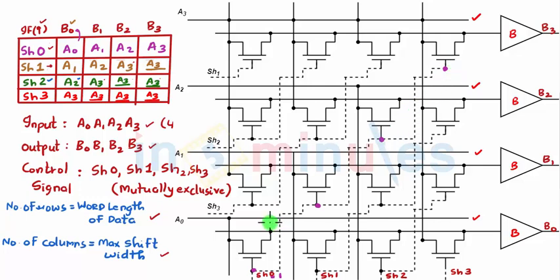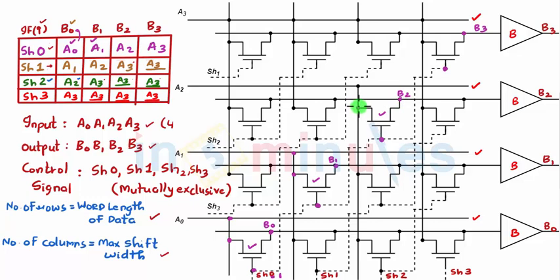When shift 0 is active, this transistor is on and its other terminal is connected to A0, so B0 equals A0. Verified. The next transistor is on and connected to A1, so B1 equals A1. Verified. The next is on and connected to A2, so A2 equals B2. Verified. Similarly the last is on and connected to A3, so B3 equals A3. Verified. You can see the complete diagonal being activated.